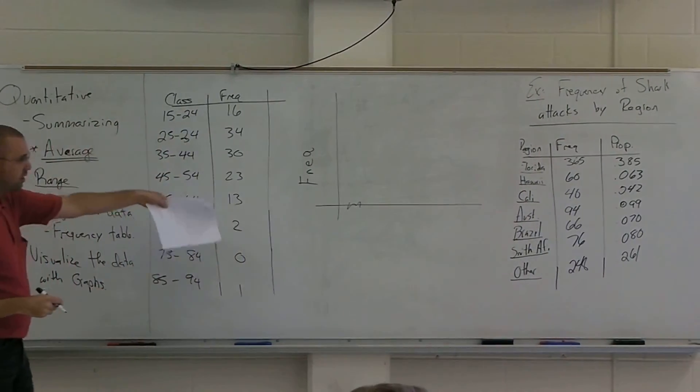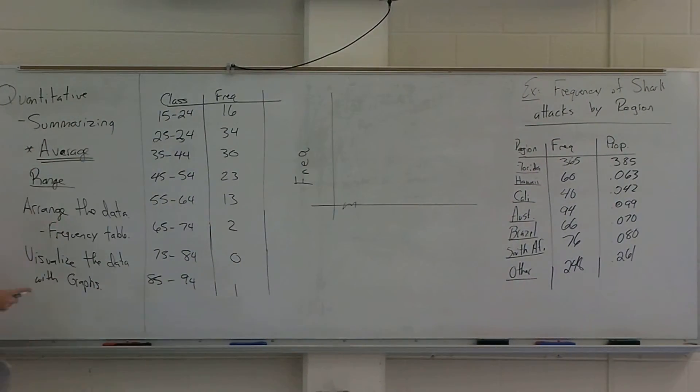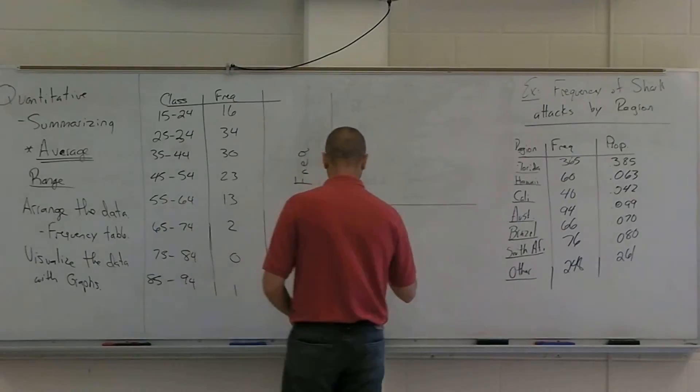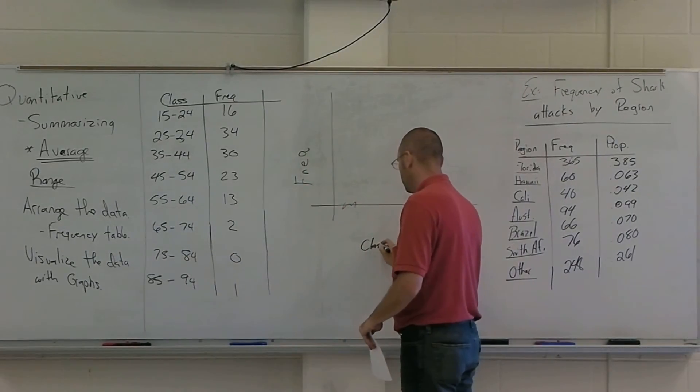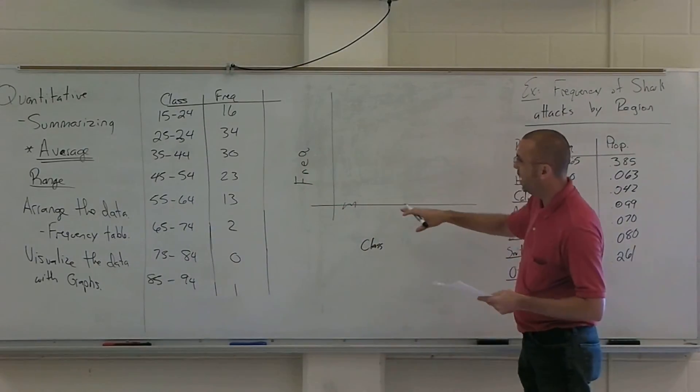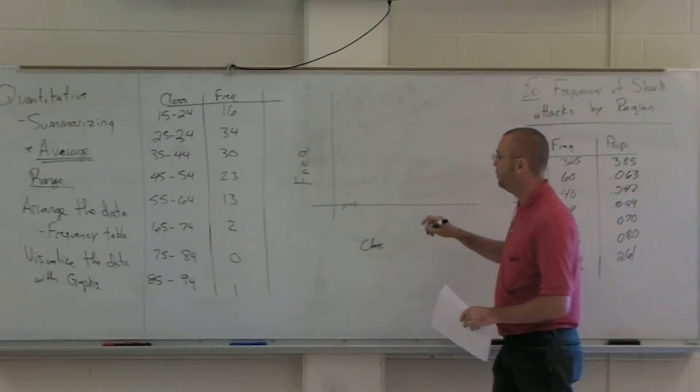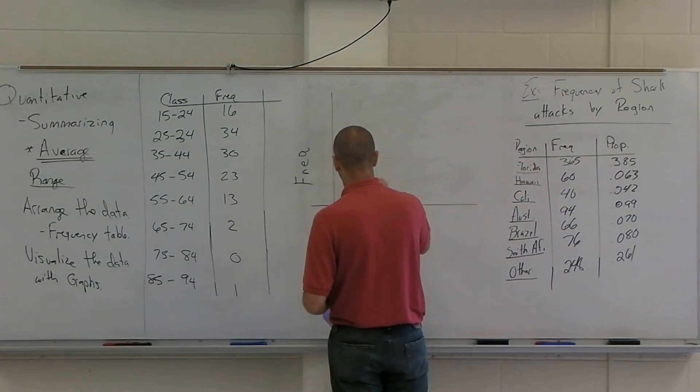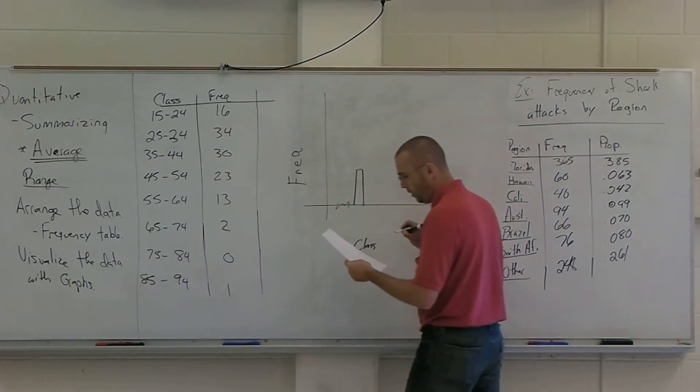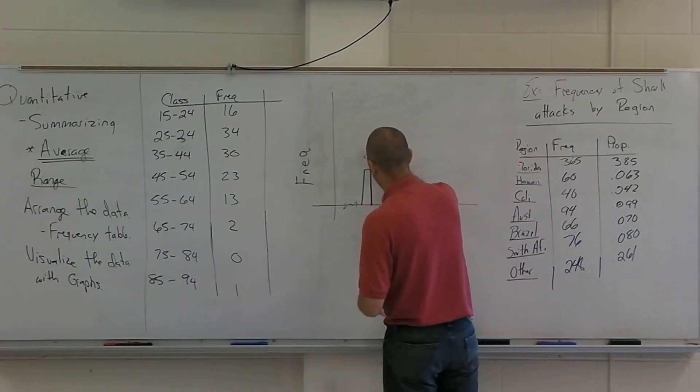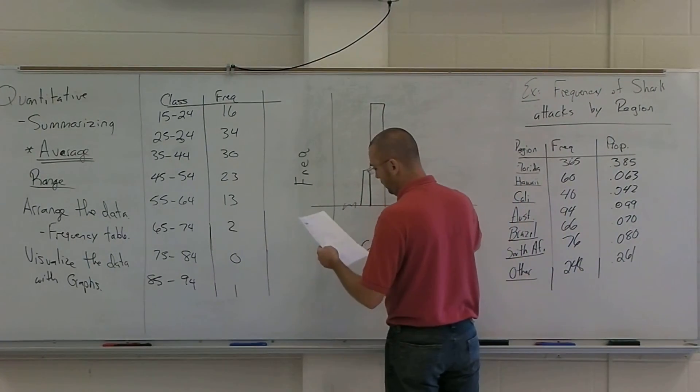Along the vertical axis here, I'm going to call that the frequency. And then along the bottom here are going to be each of my classes. The first class is my 15 to 24 and there are 16 of those. So I'll put that down that high. And then the other ones I'll fill in as appropriate.